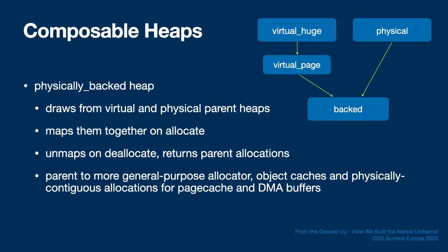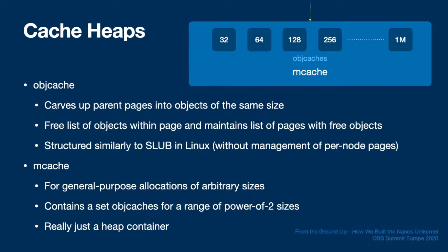A single instance of the backed heap is used to feed general-purpose allocators as well as physically contiguous buffers for device and DMA use. Now let's say we want to carve such mapped pages into smaller allocations. We typically use an object cache heap called objcache to draw from backed page allocations and serve up smaller allocations of a fixed size, maintaining an in-place free list of objects within a page as well as a list of pages with free objects available. This is much like what the slub allocator does in Linux.